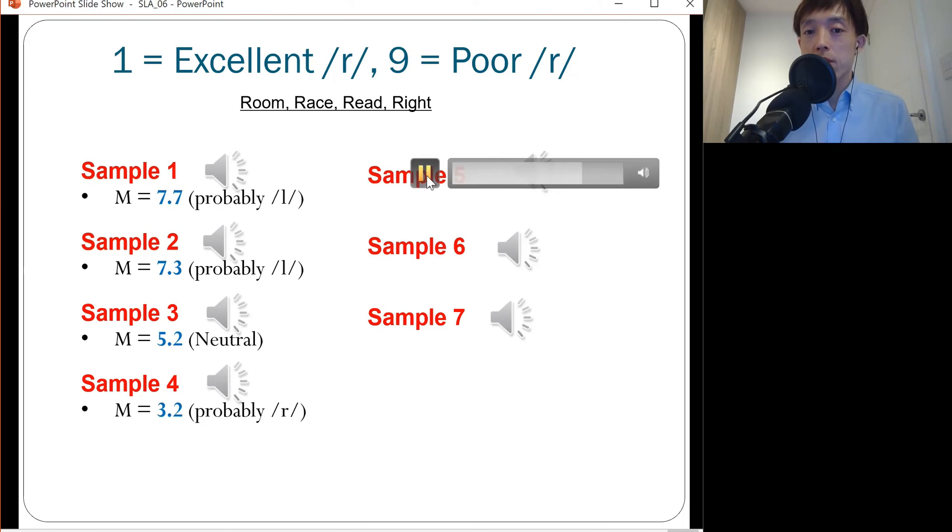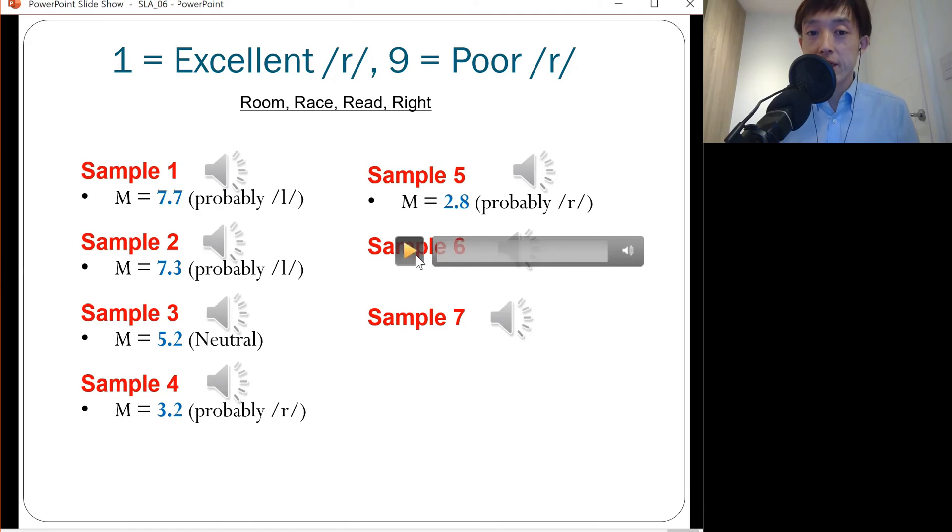Participant 5 was judged to be 2.8, so probably R. How about participant 6? She was judged to be 2.1, so good R.